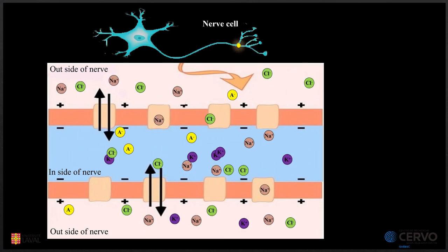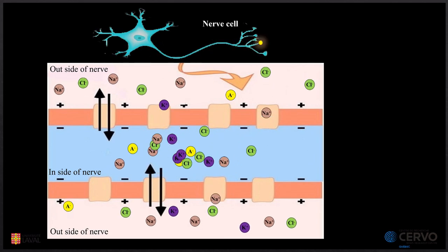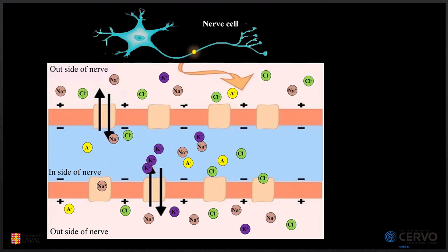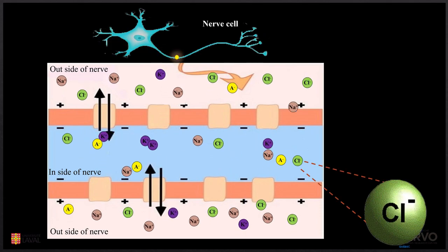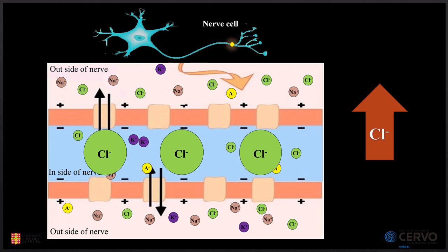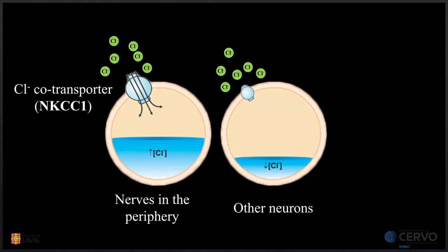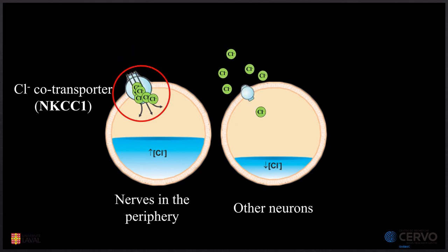But there is one big difference between the peripheral nerves and other neurons in the spinal cord and brain. It's about chloride. Chloride concentration is much higher in the peripheral nerves than other neurons. And this is because of one of the chloride co-transporters, NKCC1, which accumulates the chloride much more in the peripheral nerves than other neurons and keeps the chloride concentration higher in the peripheral nerves.